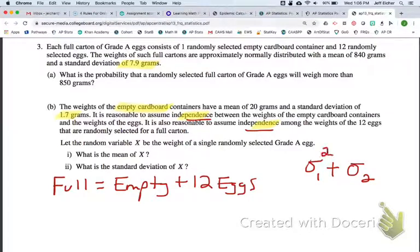But to be able to combine standard deviations and random variables, we need the Pythagorean Theorem of Statistics. But before we get there, we're getting ahead of ourselves there.